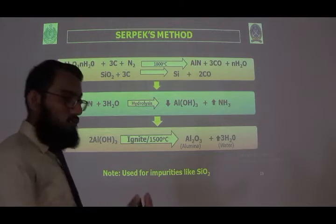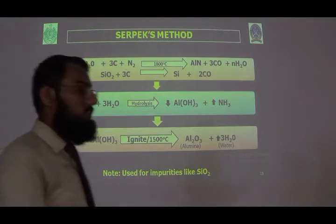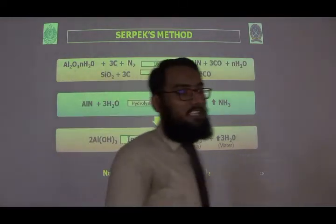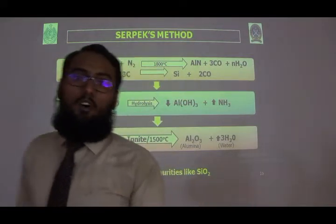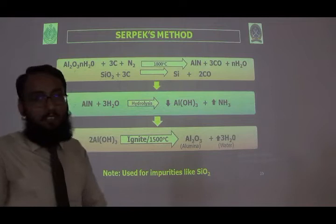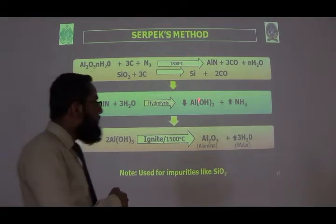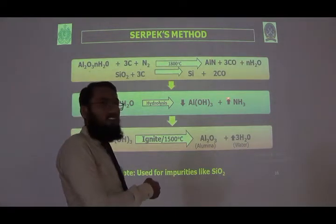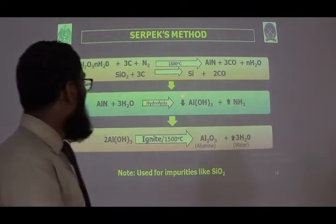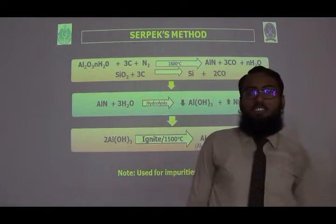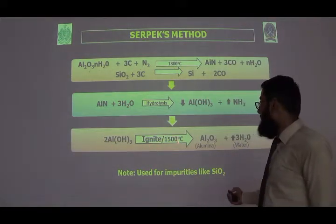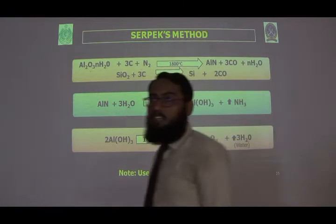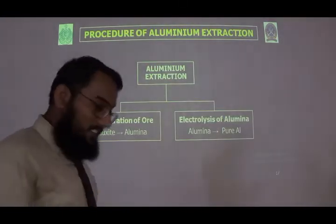After the Serplex reaction, aluminium nitride is in aqueous form and silicon settles as a solid. In the third step, aluminium nitride undergoes hydrolysis — reaction with water — to produce a precipitate of aluminium hydroxide and ammonia gas, which is released from the reaction. The aluminium hydroxide precipitate settles and is then ignited at 1500 degrees centigrade to give aluminium oxide, with water evaporating.